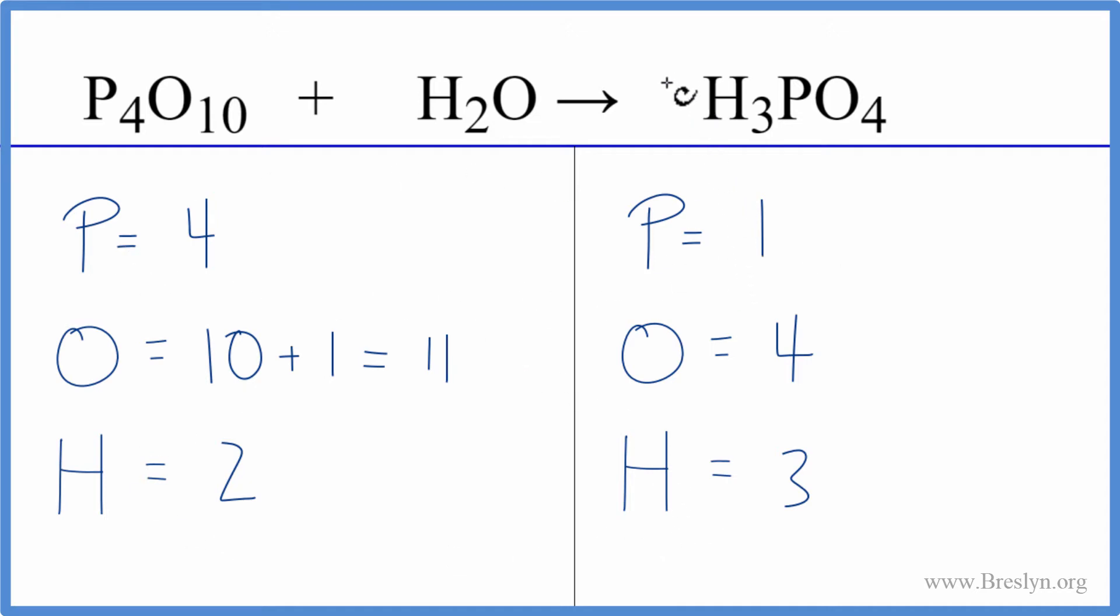If we put a four in front of the phosphoric acid, we would have three times four for the hydrogens, so that gives us 12 of those. Phosphorus one times four gives us four phosphorus atoms.